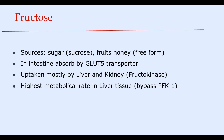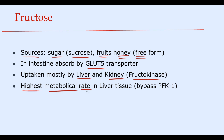In summary: fructose is obtained from sucrose, honey, and fruits, and is the only monosaccharide consumed in free form. In the intestine, fructose is absorbed by the GLUT5 transporter, and from the blood it is taken up primarily by liver and kidney tissues due to their highest fructokinase activity. Fructose has the highest metabolic rate in liver tissue compared to any other monosaccharide because its final product, glyceraldehyde 3-phosphate, enters glycolysis after the phosphofructokinase 1 rate-limiting point.